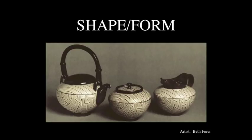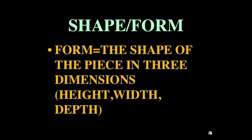The next art element we're going to discuss is shape or form. Form is the shape of the piece in three dimensions: height, width, and depth. If I'm talking about painting or drawing, all it has is height and width because it's flat — a two-dimensional artwork. Three-dimensional art forms are things like pottery and sculpture, because they have height, width, and depth.